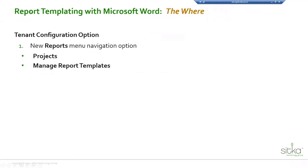In terms of where: the functionality adds a few items to the header menu in Project FIRMA. By default we've left it off for most tenants. If you want it turned on, feel free to reach out to me or your main contact at Sitka Technology, and we can help you turn it on, get you started, and answer questions about adding new properties accessible within your Word documents.